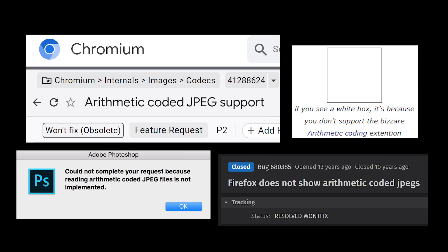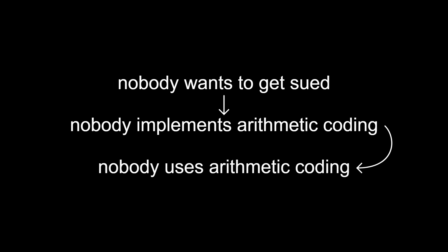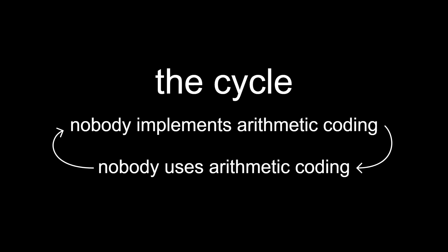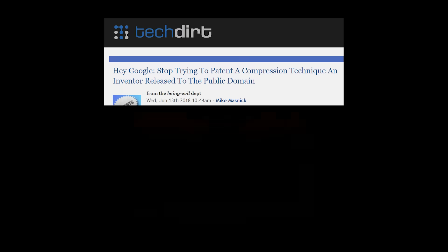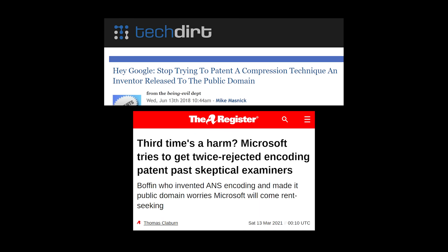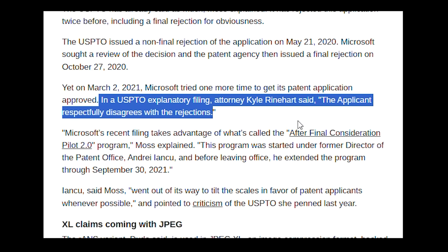The reason for this is that arithmetic coding was historically covered by patents. Even though those patents have all long expired, nobody wants to implement support for something nobody uses, and nobody wants to use something nobody supports. There's also a newer family of compression algorithms called asymmetric numeral systems. The inventor of ANS put it in the public domain, but both Google and Microsoft tried to patent it, and Microsoft eventually succeeded.